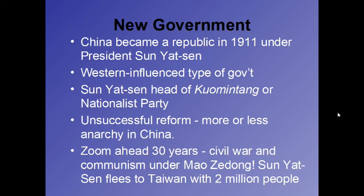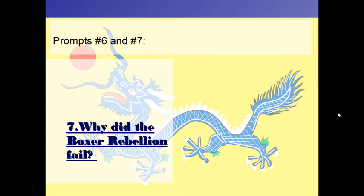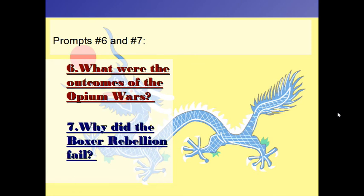We're going to close with prompts six and seven. Number six: What were the outcomes of the Opium Wars? You can do bullet points — basic stuff, doesn't need to be full paragraph sentences. Number seven: Why did the Boxer Rebellion fail? Write a paragraph on that — talk about the different factors. Pause.